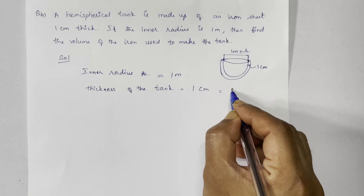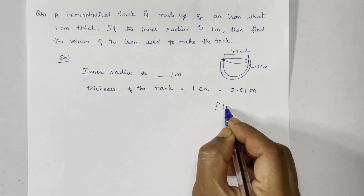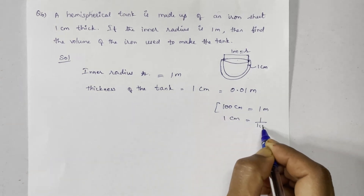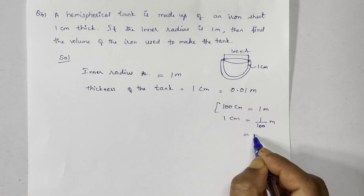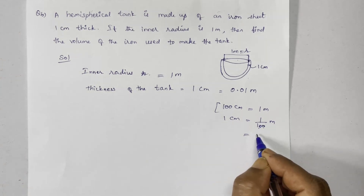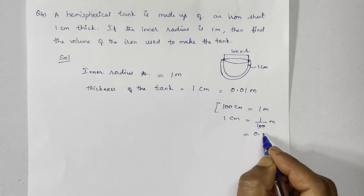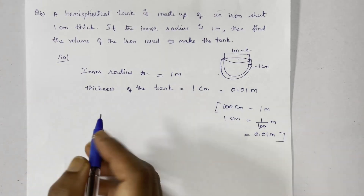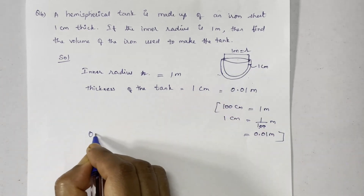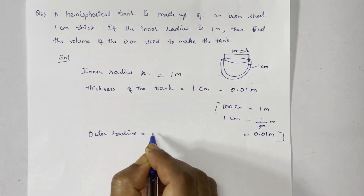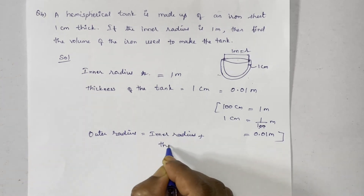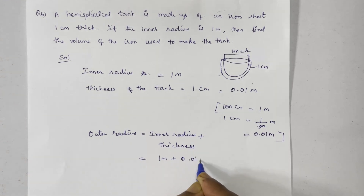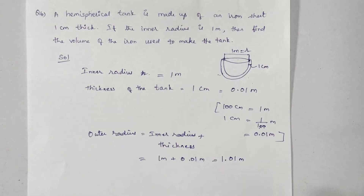To convert: 100 centimeters equals one meter, so one centimeter equals 0.01 meter. The outer radius equals inner radius plus thickness: one meter plus 0.01 meter equals 1.01 meter.